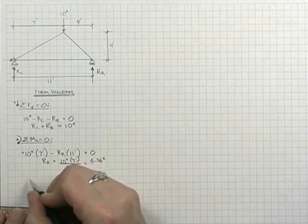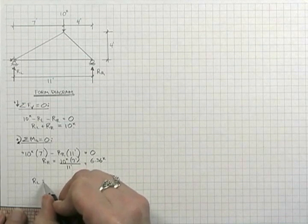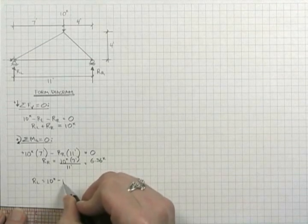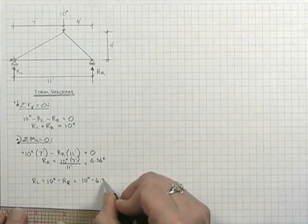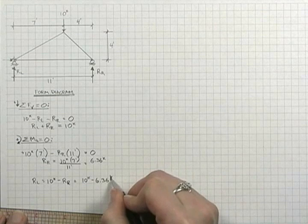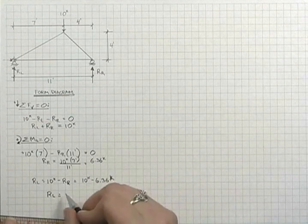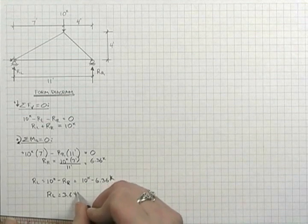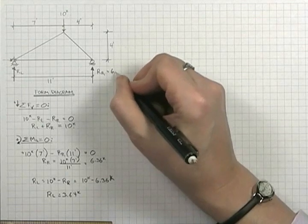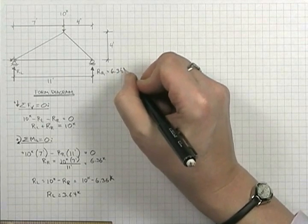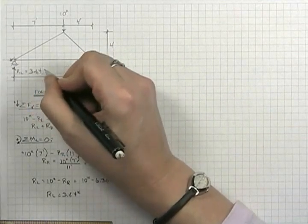Our left, going back to our previous equation, says that r left is ten kips minus r right, or six point three six kips. So r left is three point six four kips. And so we'll put this back onto our form diagram. Six point three six kips on the right-hand side, three point six four on the left-hand side.